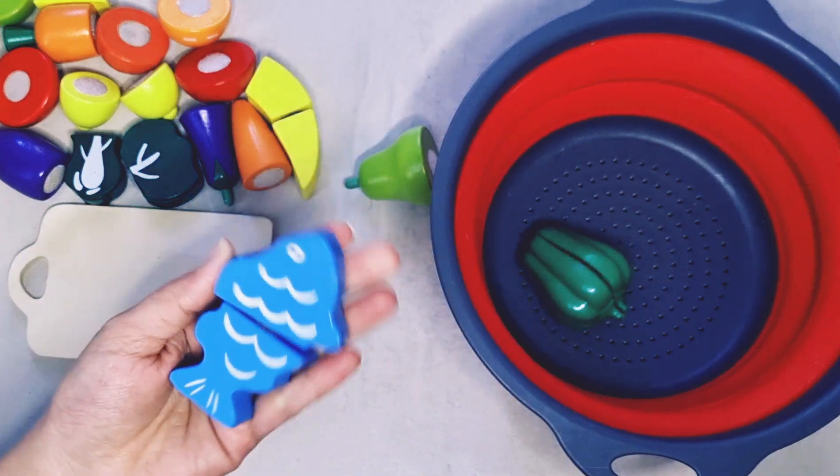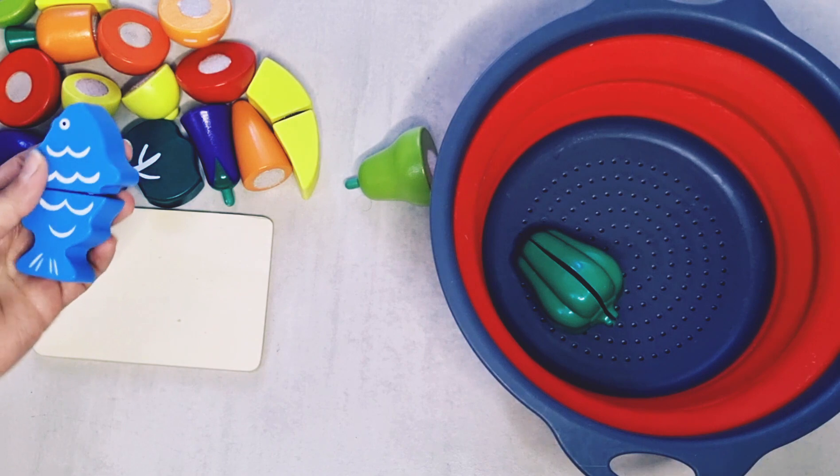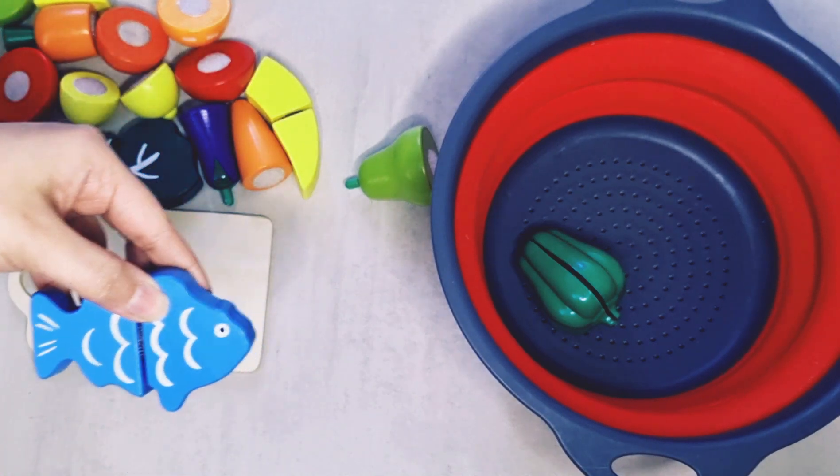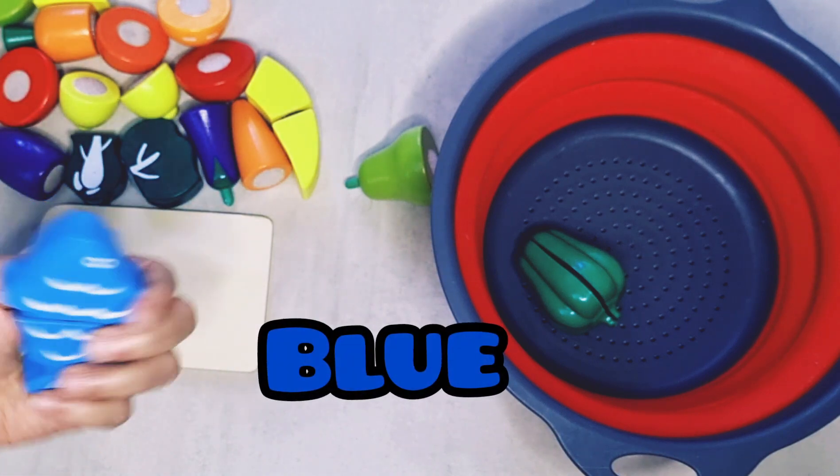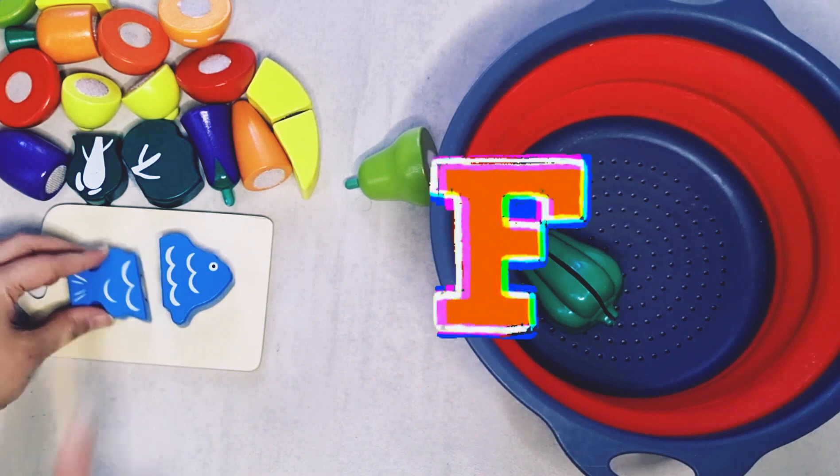What's this? It's a fish. Fish is very healthy when you eat it. It's blue in color. And fish starts with the letter F. Cut the fish.